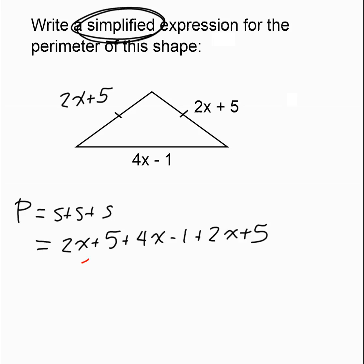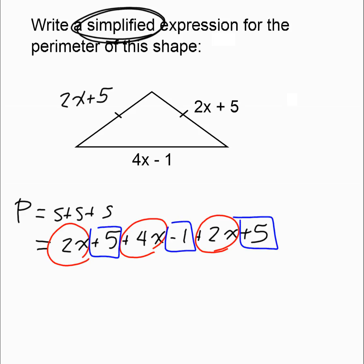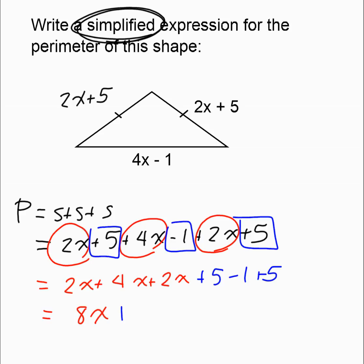The perimeter of a triangle is just side plus side plus side. The tick marks tell us that two sides are the exact same. So add up the three sides. It asks for a simplified expression, so collect like terms: put the x's together and put the constants together. Then simplify: 2x plus 4x plus 2x is 8x, and 5 minus 1 plus 5 is positive 9. So the simplified perimeter expression is 8x plus 9.